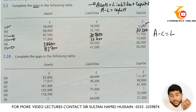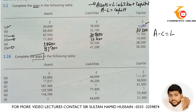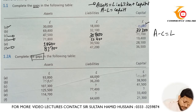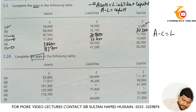Here in 1.2e, once again you need to find out the gap between assets, liabilities, and capital. Assets are given as 93,000 and liabilities are given as 44,000. You need to subtract liabilities from assets: 93,000 minus 44,000 gives you 49,000.